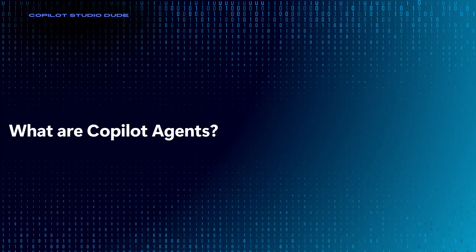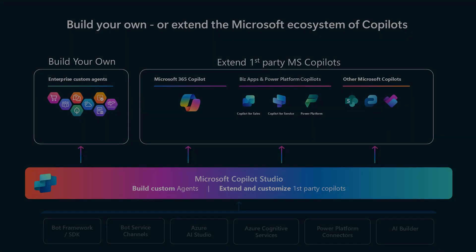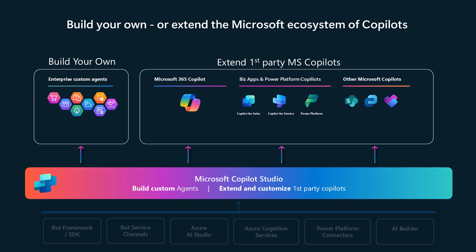Let's talk about extensibility for just a second. In the Microsoft ecosystem of Copilots, there are really two different types of Copilots or agents that we're going to be able to build using Copilot Studio. The first is that we can build our own — you're in full control. You can plug it into Facebook Messenger, have it where you talk to it on the phone, text to it, web chat, or through Teams. You're in full control of that experience.